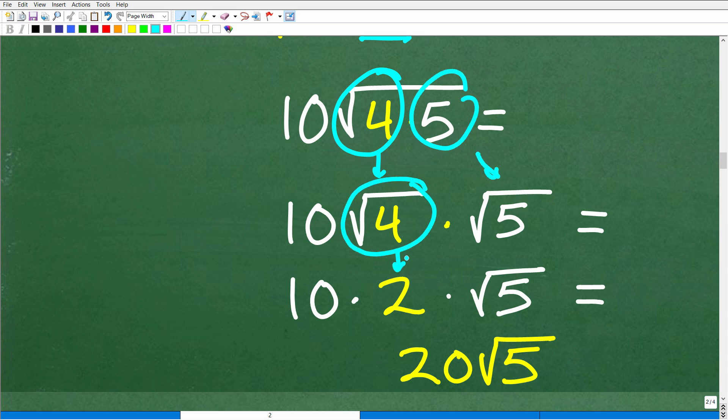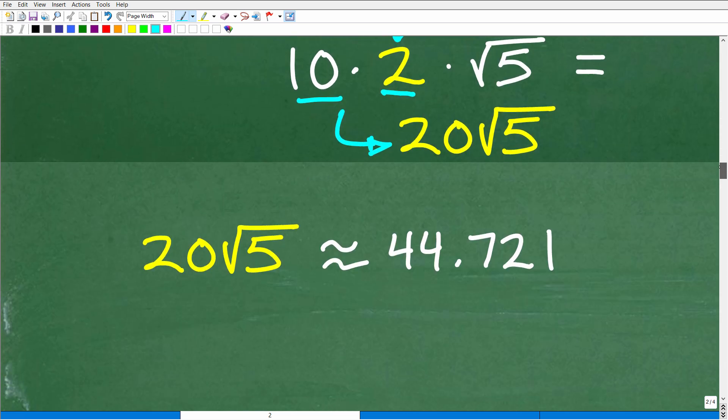And, of course, the square root of 4 is 2. So now I have 10 times 2, which, of course, is 20 times the square root of 5. And, of course, if you wanted to know that actual value, just take the square root of 5, multiply by 20, and we get approximately 44.721.